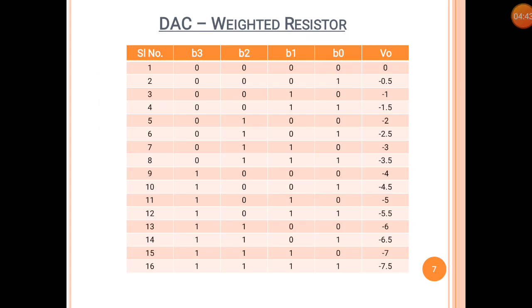In the same way, we can vary the bits B0, B1, B2, B3 from 0000 to 1111 and tabulate the readings in the last column V0. For B0 = 1 we got −0.5V, for B1 = 1 we got −1V, for B2 = 1 we got −2V, and for B3 = 1 we got −4V.